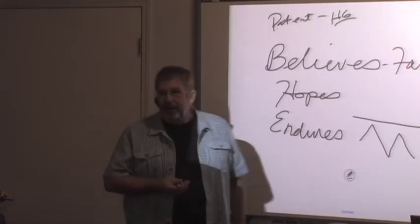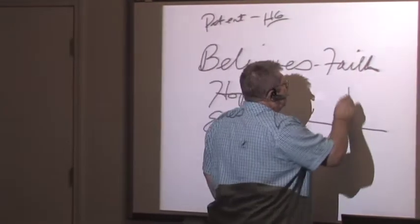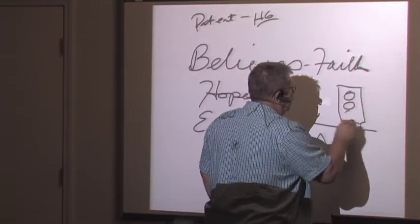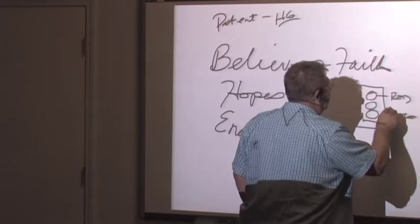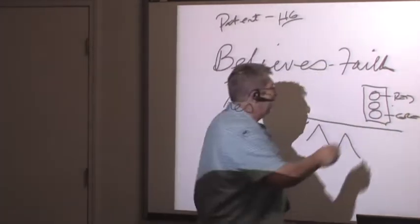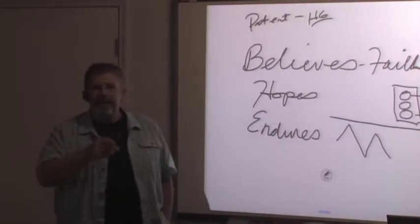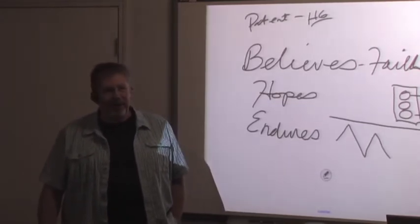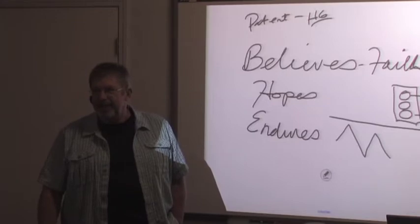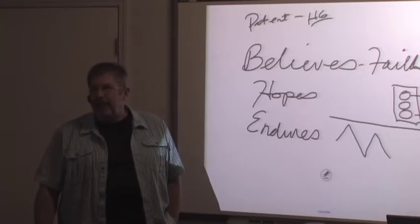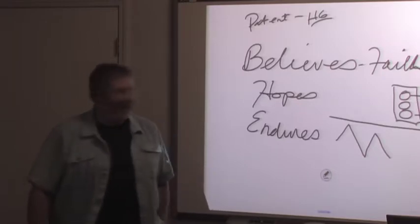That brings me to a side point. Can you tell me the colors of a traffic signal? What's the top light? Red. What color is the bottom one? Green. And what color is the one in the middle? Orange. Yellow. Yellow. We have one member of this group who believes that the middle color of the traffic signal is orange.